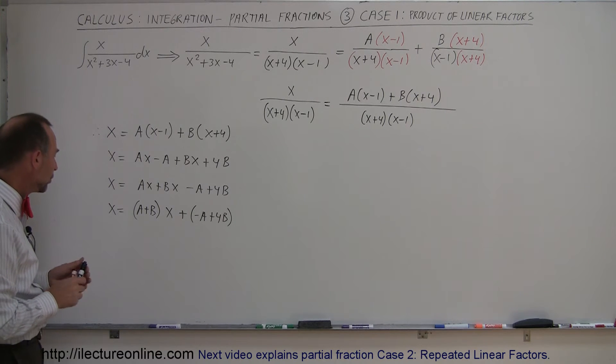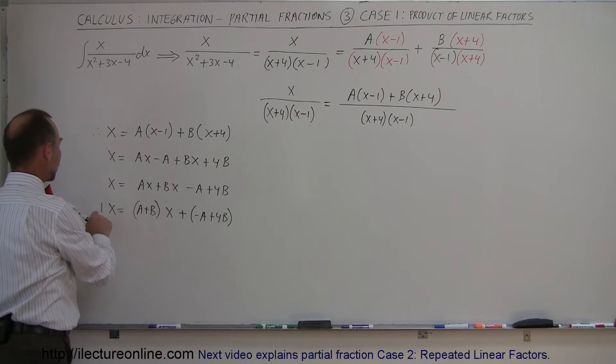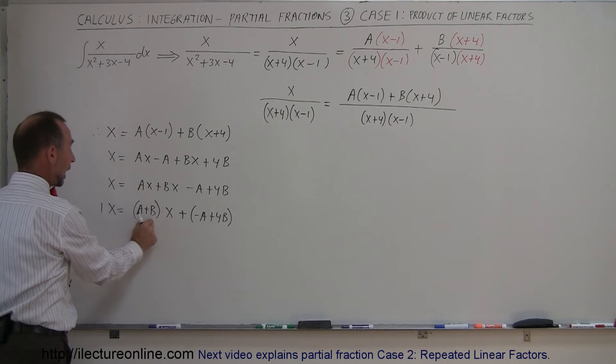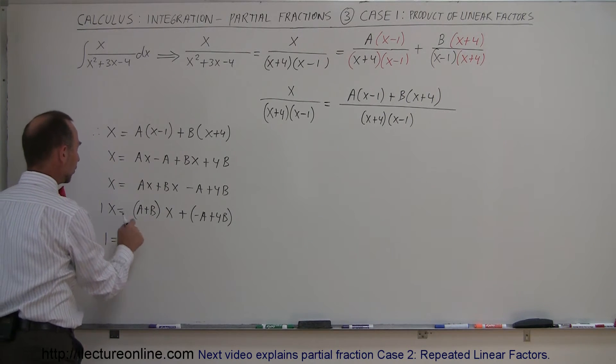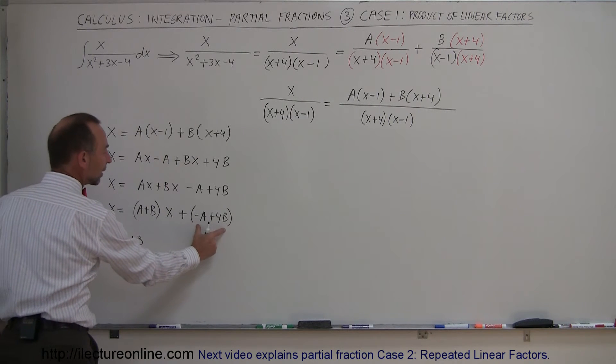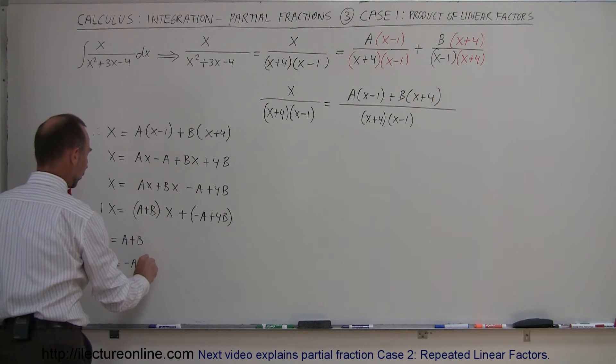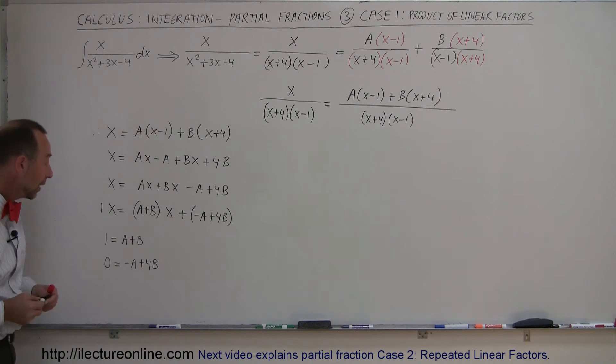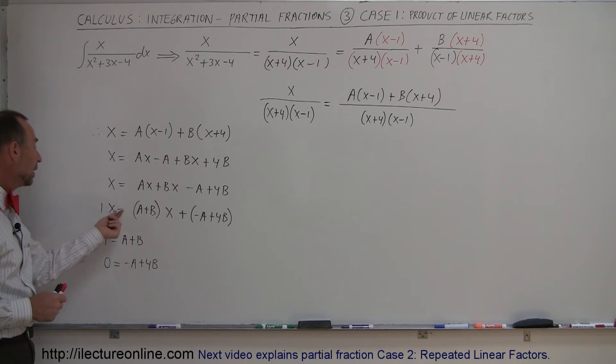And so x is equal to a plus b times x minus or plus the quantity minus a plus 4b. All right, now I think we can see what we can do here. If x is equal to this, notice that, of course, we have a coefficient of 1 in front of the x. So if 1x equals this, that means 1 must equal a plus b. So we can say that 1 equals a plus b. And since there's no corresponding term on the left side to equate this, we can therefore say that 0 is equal to minus a plus 4b. And that's how we end up with two equations and two unknowns, a and b, that we can solve simultaneously. So again, notice that this is like basically 1x plus 0 equals a plus bx plus this. So therefore, 1 equals a plus b, and the 0 equals this term right there.